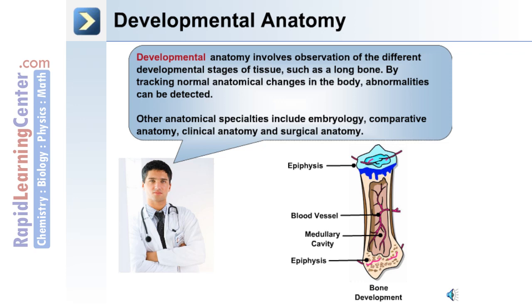Examples of other anatomical specialties include embryology, comparative anatomy between different species, clinical anatomy, and surgical anatomy.